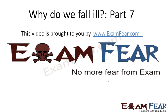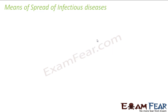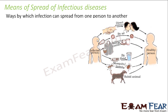Hello friends, this video on why do we fall ill part 7 is brought to you by examfear.com — no more fear from exams. Some time back we were talking about infectious diseases and how they spread from one person to another. The bacteria or microorganisms which cause these diseases get transferred from one person to another, and the different ways by which they spread are known as means of spread.